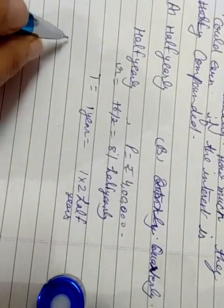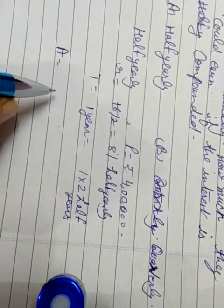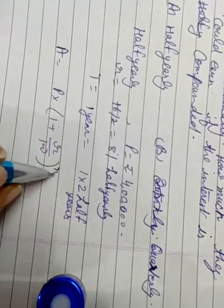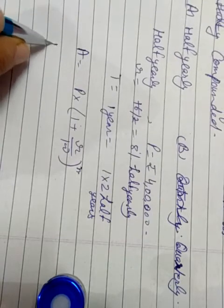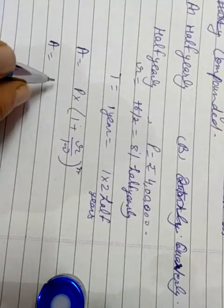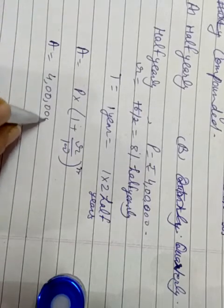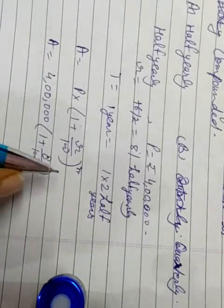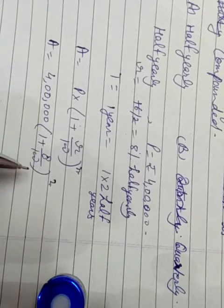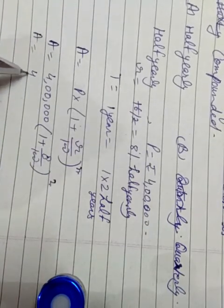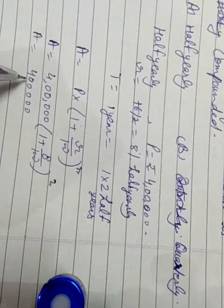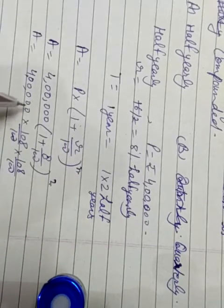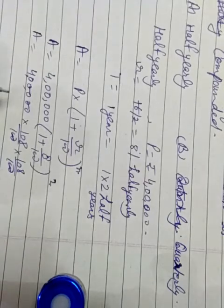By putting the value, write formula: A is equal to P into 1 plus R upon 100 whole power M. A is equal to 4,00,000 into 1 plus 8 upon 100 whole power 2. That gives 4,00,000 into 108 upon 100 into 108 upon 100.